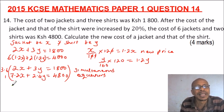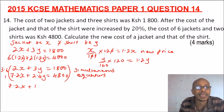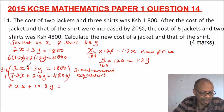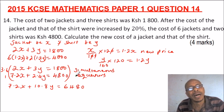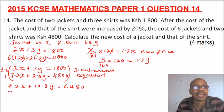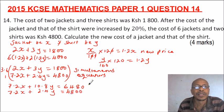Rewriting the equations after multiplication: 3.6 multiplied by 2 gives 7.2x, and 3 multiplied by 3.6 gives 10.8y, with 1,800 multiplied by 3.6 giving 6,480. So the first equation becomes 7.2x + 10.8y = 6,480. The second equation remains unchanged: 7.2x + 2.4y = 4,800.